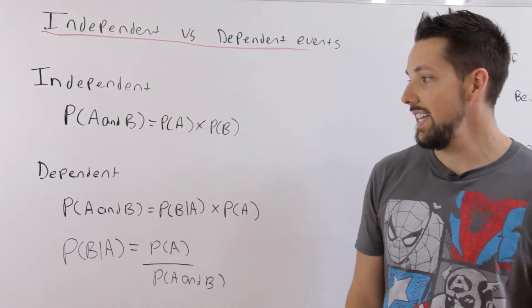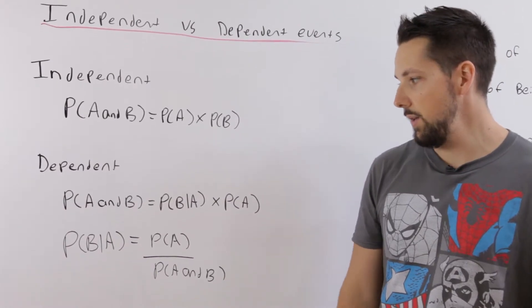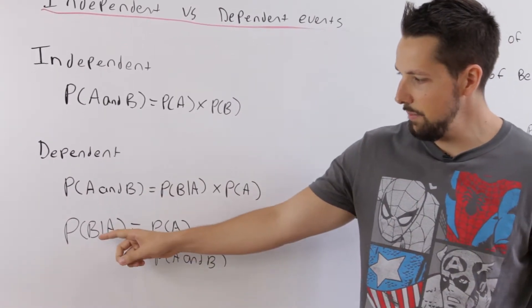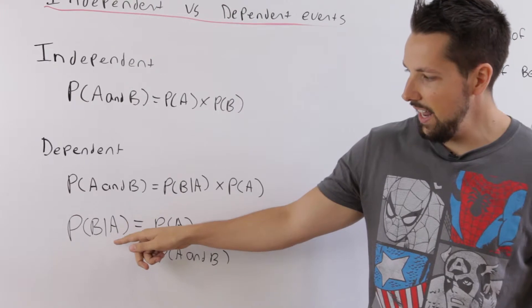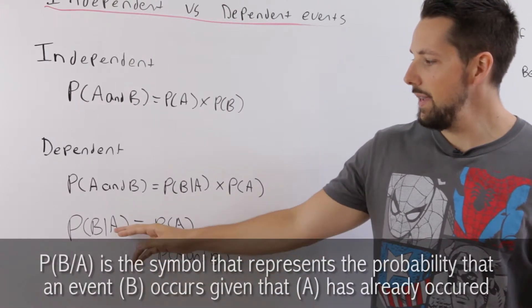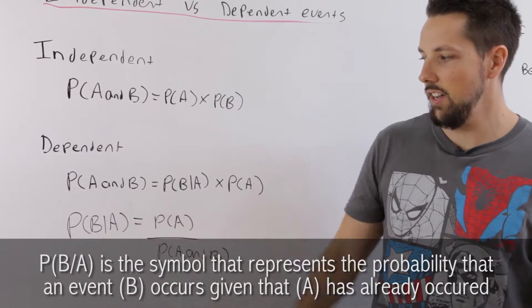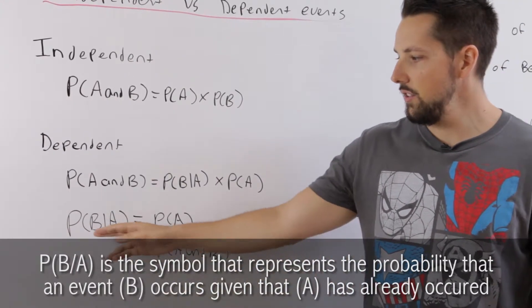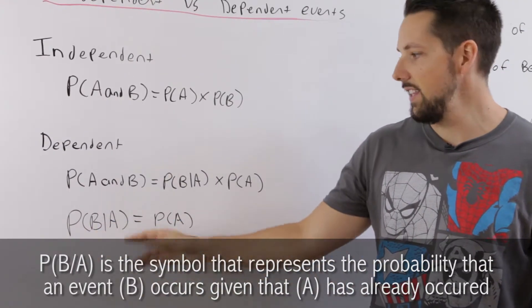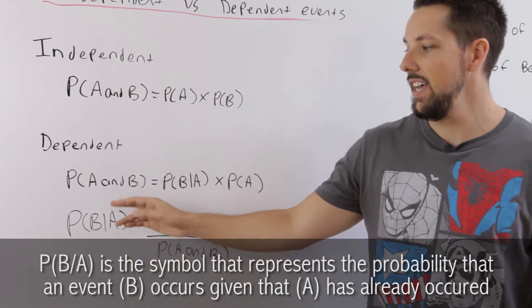With dependent events, it gets a bit more complicated but not too much. You see here the symbol P(B|A). What that means is the probability of B given that A has already occurred. This is still just one probability. The line is a symbol that represents 'given that.'